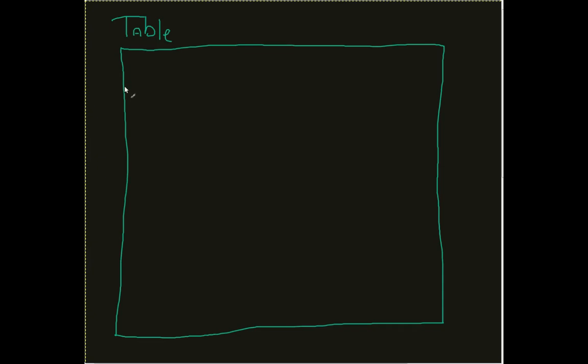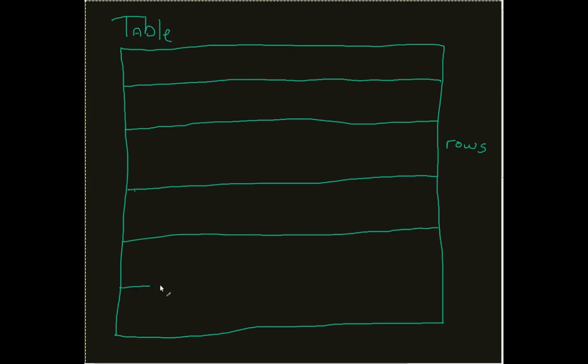Well, it starts to break down even further. Notice how right now what I'm starting to add in are these horizontal lines. Now, these horizontal lines are typically known as rows. And that's exactly what they do, is they just section out all of the horizontal sections.